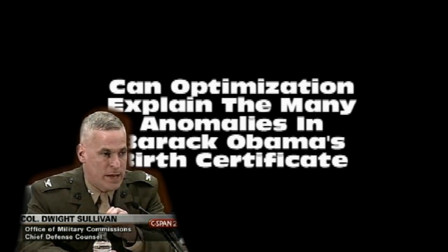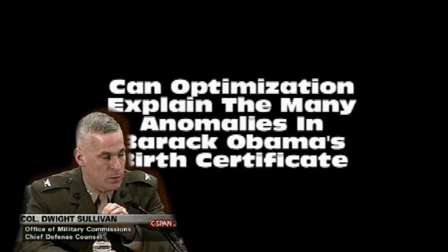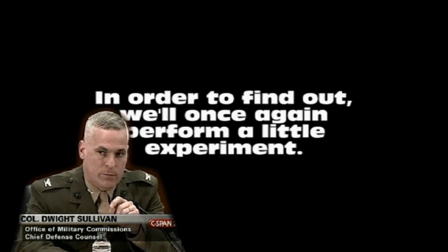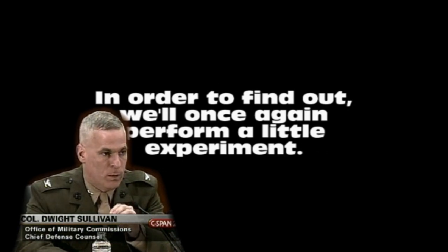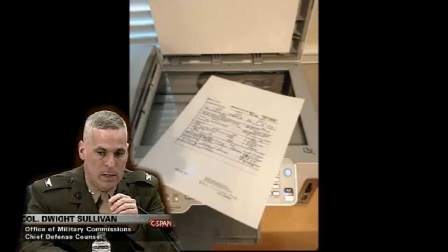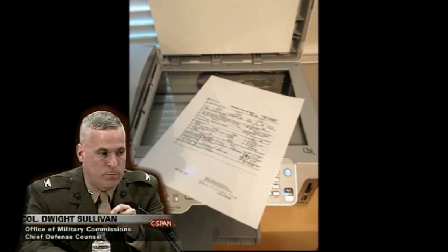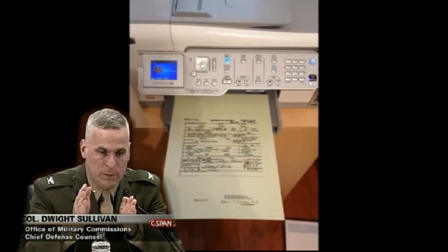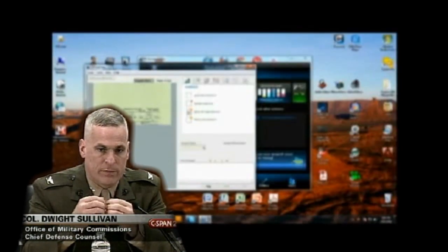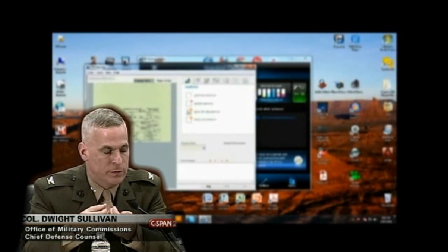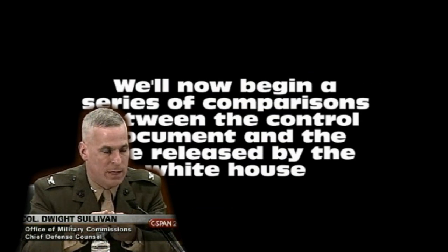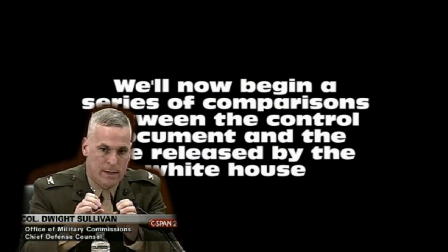Now for the big question: can optimization explain the many anomalies in Barack Obama's birth certificate? In order to find out, we'll once again perform a little experiment. You'll recall that we took Barack Obama's birth certificate, removed the green background, then photocopied it onto green basket weave safety paper, then scanned it into a computer. This time, we also optimized the document. We'll now begin a series of comparisons between the control document and the one released by the White House.